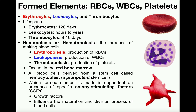Each one of these different cells is going to circulate in the blood and perform different functions. Generally speaking, erythrocytes function in transport of respiratory gases. Cells require oxygen, and we need to get rid of waste products like carbon dioxide. These red blood cells through their hemoglobin protein transport oxygen and CO2. Erythrocytes also last around 120 days on average — this is an important number for anatomy and physiology, the lifespan of a red blood cell.